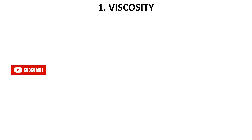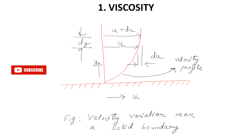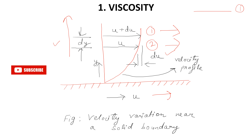The first topic is viscosity. The diagram shows velocity variation near a solid boundary — velocity in the x-direction and distance between two layers in the y-direction. Layer 1 is moving with velocity u plus du, and Layer 2 is moving with velocity du. du is the difference of velocities and dy is the change in distance between the two layers. The resistance between adjacent layers of fluid is known as viscosity.